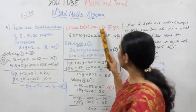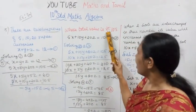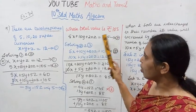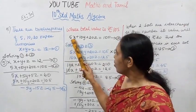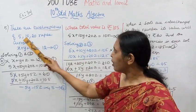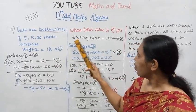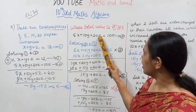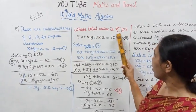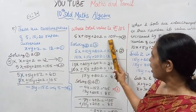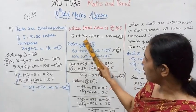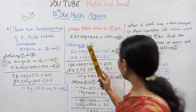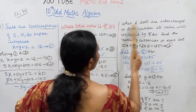Whose total value is 105. So the total value gives us: 5x plus 10y plus 20z equal to 105. This is the second equation.